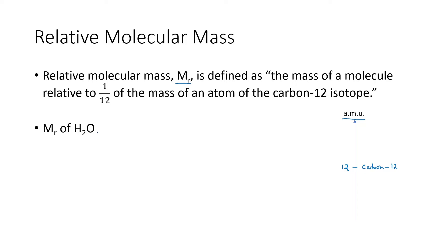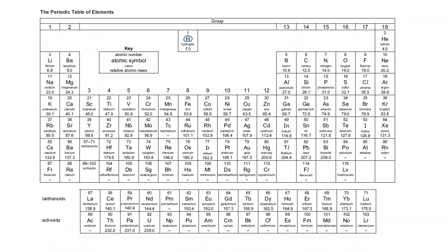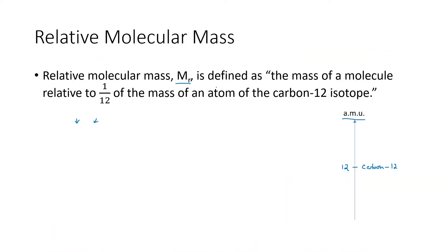What we're going to do is look at the periodic table and find the mass numbers or relative atomic masses of hydrogen and oxygen. Hydrogen has a mass number of 1, and oxygen has a mass number of 16. So now all we need to do is add them up: two atoms of hydrogen multiplied by 1.0, plus 16.0 for oxygen, which is added once because there's only one oxygen atom. This gives us 18.0.